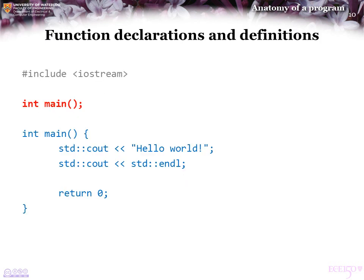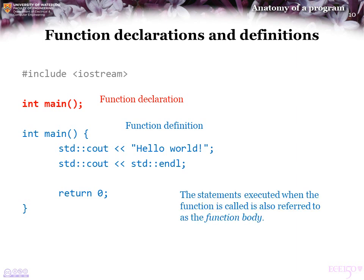Next, we're going to look at function declarations and definitions. The first thing here is a function declaration, which is a statement as it ends in a semicolon. This tells the compiler that main is going to be a function. A function definition looks a lot like the declaration, but instead of a semicolon, we have a block of statements. When the function main is called, it is the block of statements that immediately follows the name in the function definition that will be executed one at a time. This block of statements is also referred to as the function body.